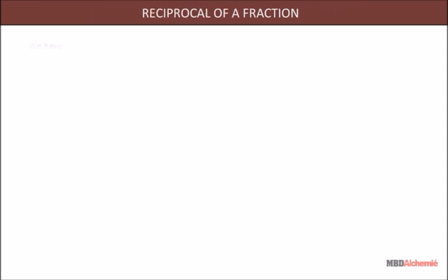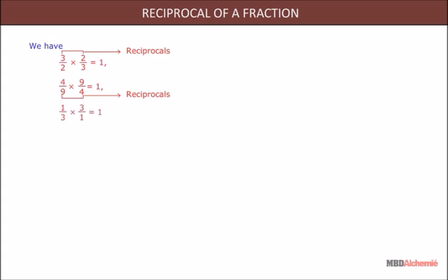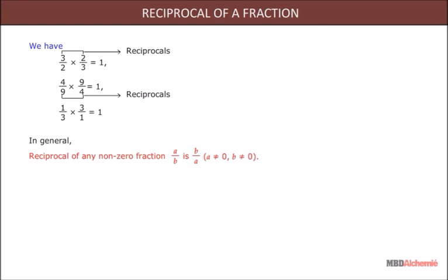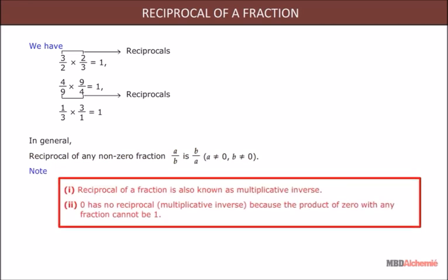Reciprocal of a fraction: 3/2 × 2/3 = 1; 4/9 × 9/4 = 1; 1/3 × 3/1 = 1. In general, the reciprocal of any non-zero fraction a/b is b/a, where a and b are not equal to 0. Note: the reciprocal of a fraction is also known as its multiplicative inverse. Zero has no reciprocal because the product of 0 with any fraction cannot be 1.